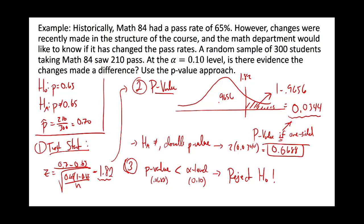We wouldn't double it for a one-sided alternative. The reason we double it is because we were willing to reject in both directions — our p-value reflects one direction, but we care both ways, so we account for that by doubling.